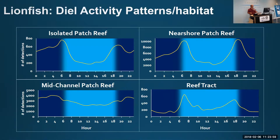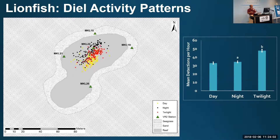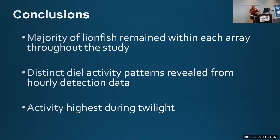Using acoustic telemetry, we can see very clear patterns. The black dots show activity during the night, the red dots during twilight, and yellow during the day. There was a very clear, significant difference in activity during the twilight period. Conclusions: the majority of lionfish remained within the array with very high site fidelity, they show distinct activity patterns, and the peak activity happens during sunset and sunrise — more activity during twilight overall.